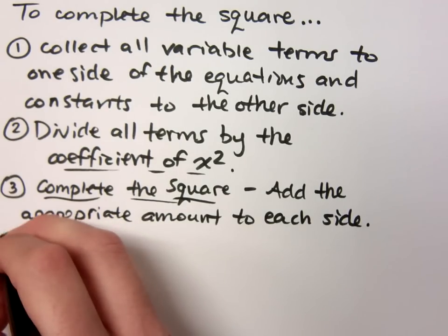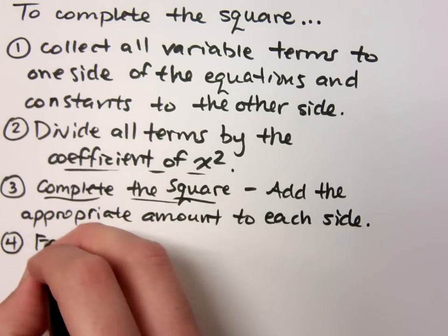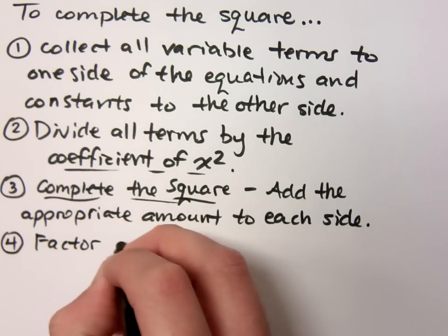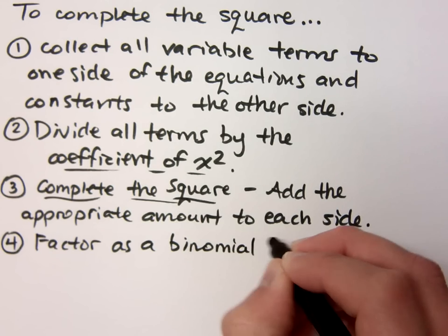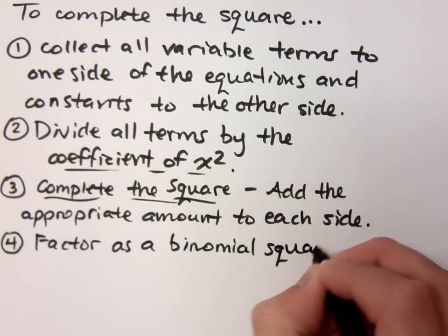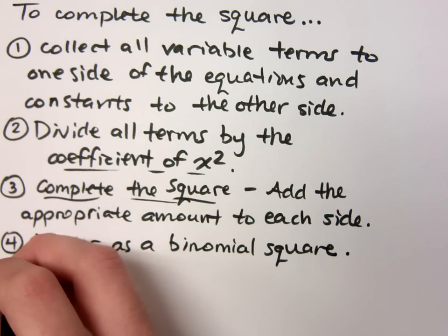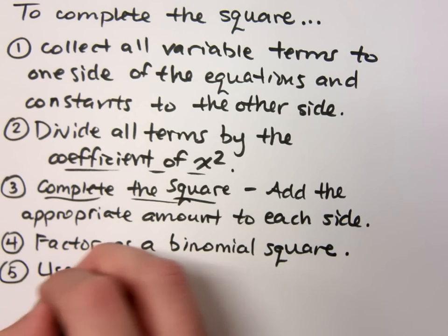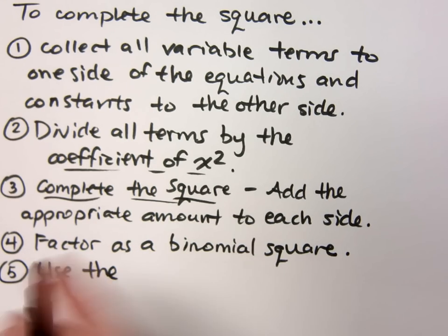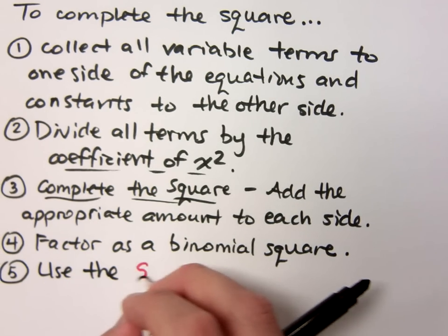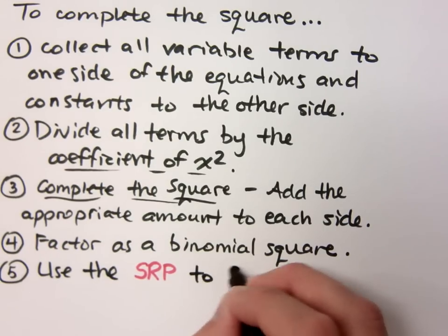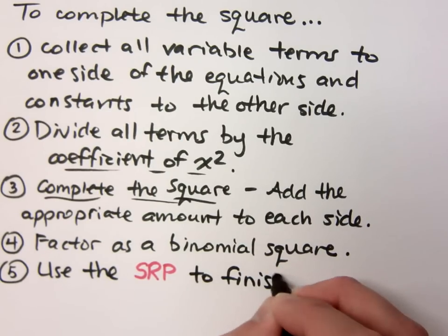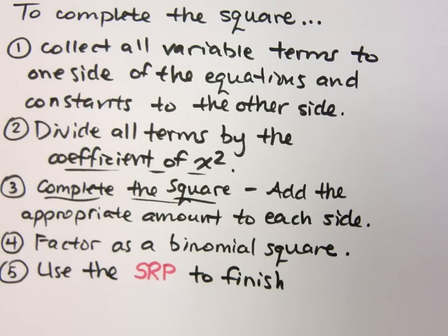Once we've done that, you factor as a binomial square. And the fifth step is that we use the square root property to finish the problem.